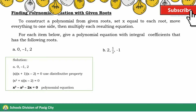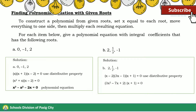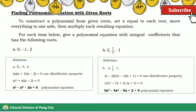For letter B, the given roots are 2, 1/3, and −1. Setting x equal to each root and moving everything to one side, then multiplying each resulting equation, the given roots give us the polynomial equation 3x³ − 4x² − 5x + 2 = 0.